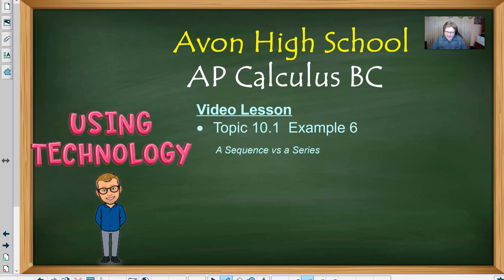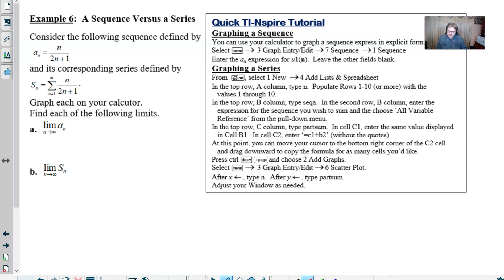Let's take a look at a sequence versus a series using technology. The example starts by asking us to consider the following sequence defined by a_n = n over 2n plus 1, and its corresponding series, which is the summation of n over 2n plus 1. We're going to graph each of these on the calculator and find both of their limits, and we're going to do that very visually.